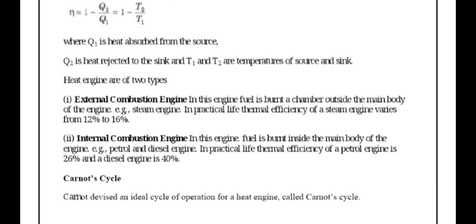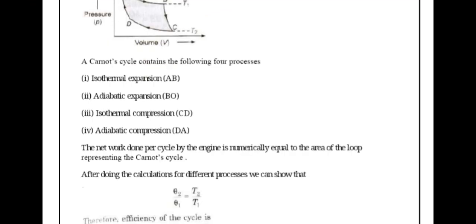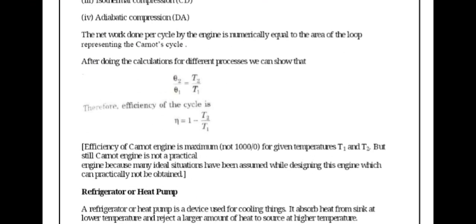Carnot cycle: Carnot devised an ideal cycle of operation for a heat engine. The Carnot cycle contains four stages: isothermal expansion from A to B, adiabatic expansion from B to C, isothermal compression from C to D, and adiabatic compression from D to A. The net work done per cycle by the engine is numerically equal to the area of the loop representing the Carnot cycle. Efficiency η equals 1 minus T2/T1.